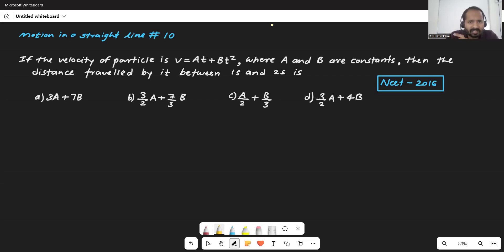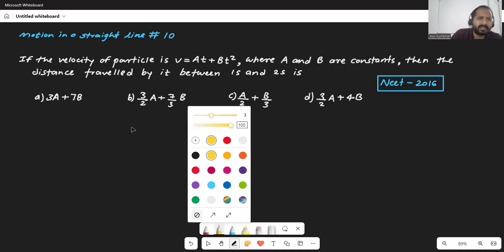It was asked in NEET 2016. Let's read it. If the velocity of particle is v = At + Bt², where A and B are constants, then the distance travelled by that particle is between 1 second and 2 seconds. So this is a little bit of instantaneous, as 1 second and 2 seconds, I asked the distance.